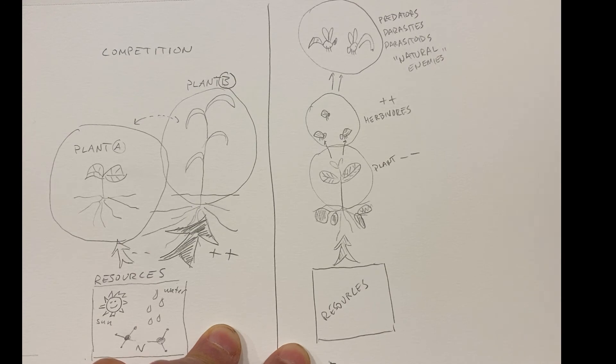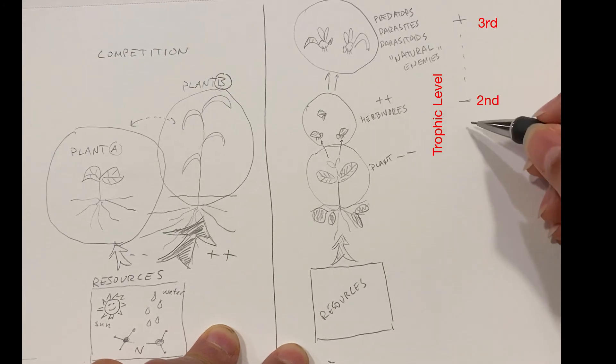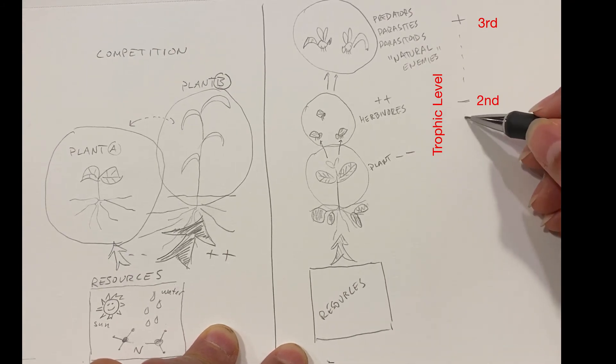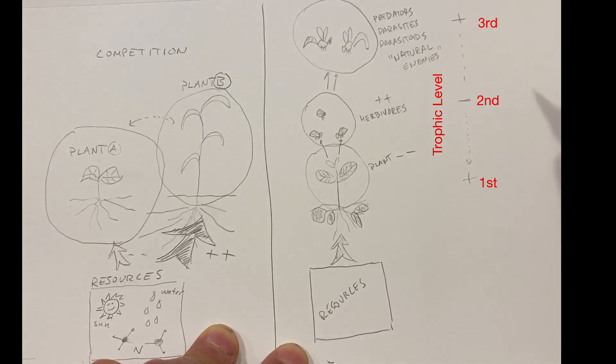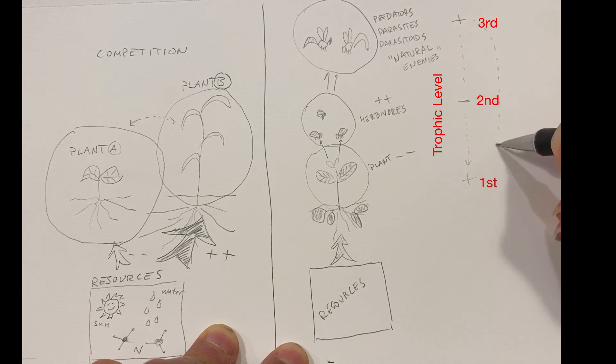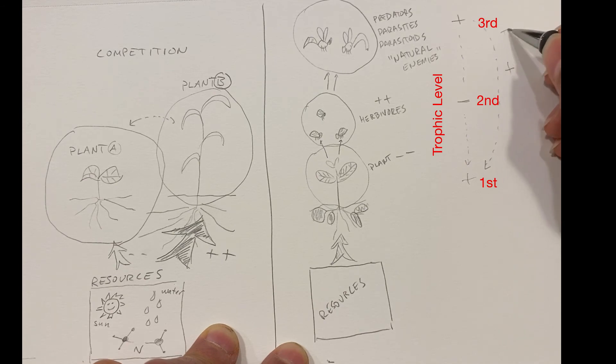So when the number of predators, parasites, these natural enemies, increases, this has a negative effect on the abundance of the herbivores. And because there's fewer of them, there's going to be more plant biomass to go around. So there's a positive effect on the plants. And what this means is that there's an indirect positive effect of those natural enemies on the plants.